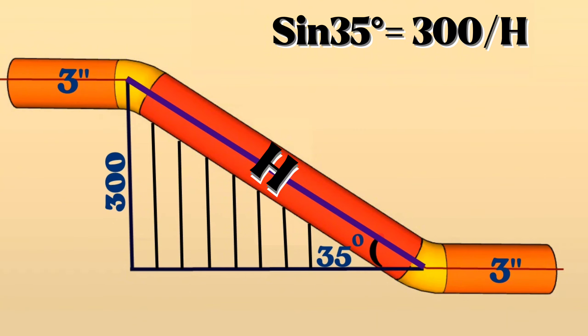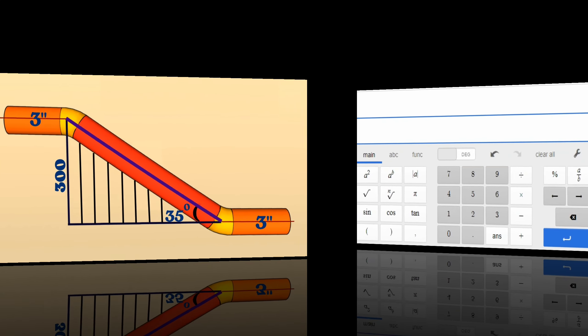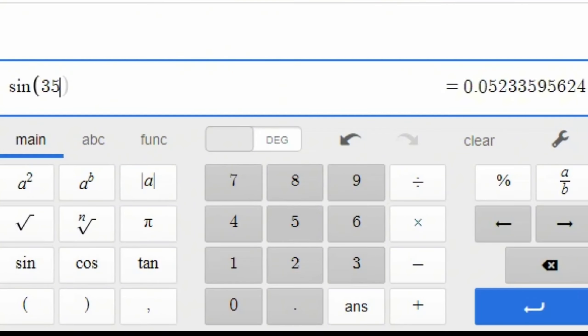We will use multifunctional calculator to find the sine 35 degree. Sin 35 degree approximately equals 0.573576.